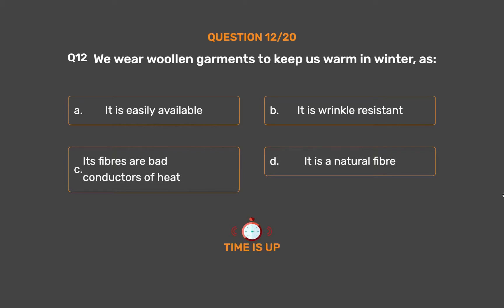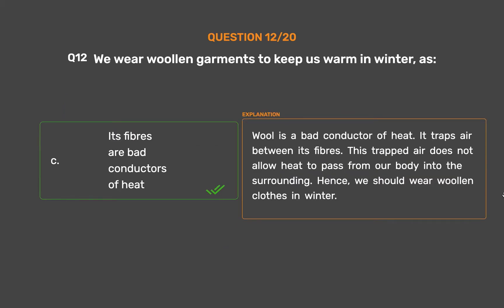The correct answer is Option C, Its fibers are bad conductors of heat. Wool is a bad conductor of heat — it wraps air between its fibers. This trapped air does not allow heat to pass from our body into the surroundings. Hence, we should wear woolen clothes in winter.